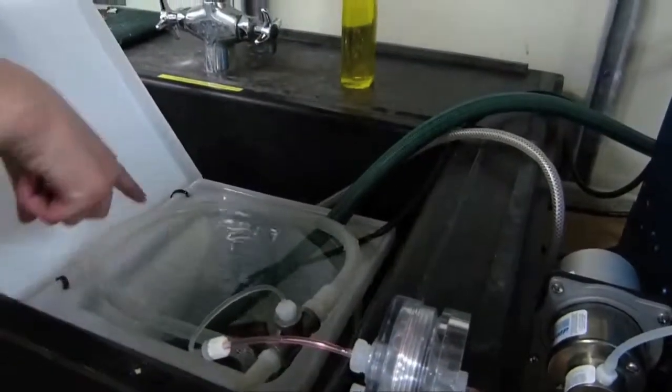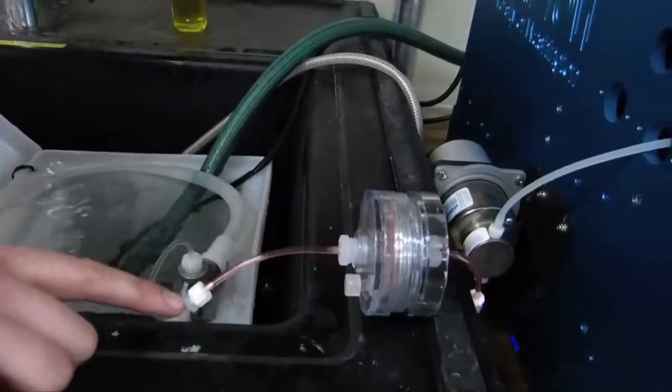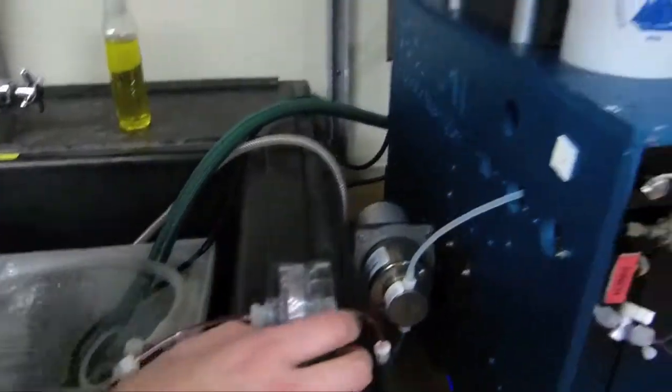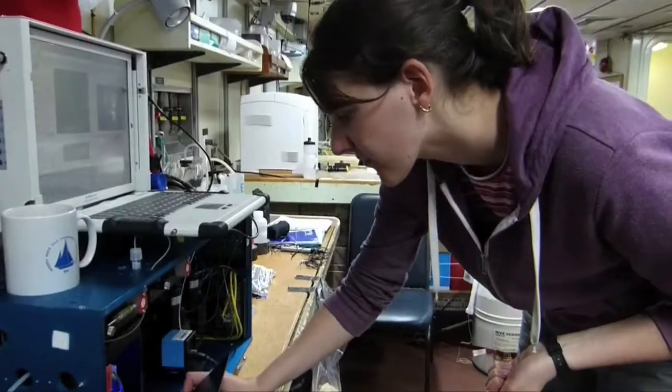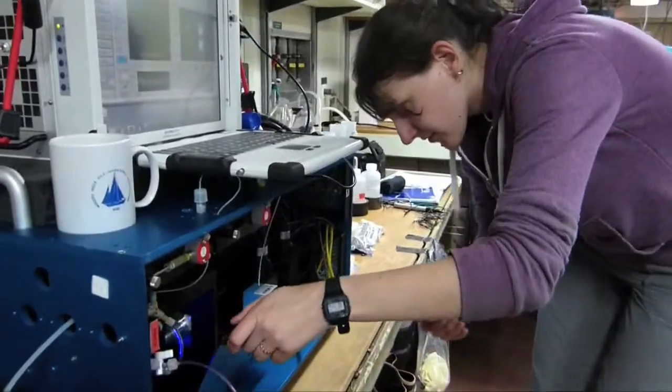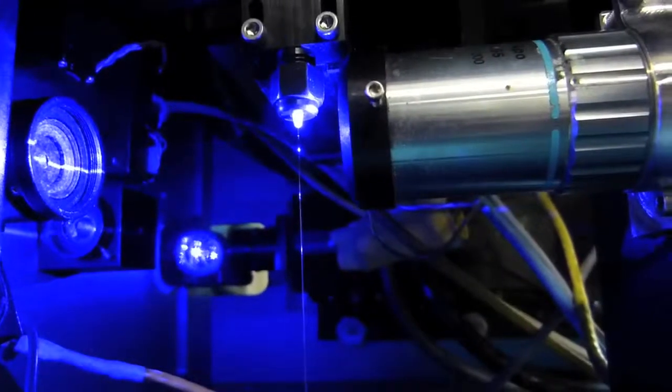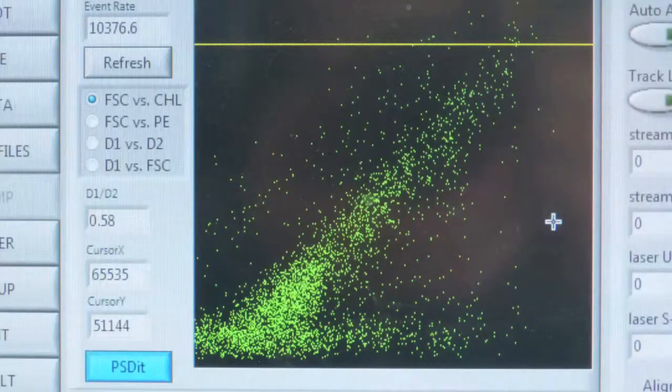So first seawater flows into a bucket where all the bubbles are taken out. And then my intake pulls in seawater straight from that bucket and shoots it through a tiny stream where a laser hits the stream. Every time a cell passes the laser, the scattering of the laser and the fluorescence that's given off by the cell is collected by the optics of my instrument.